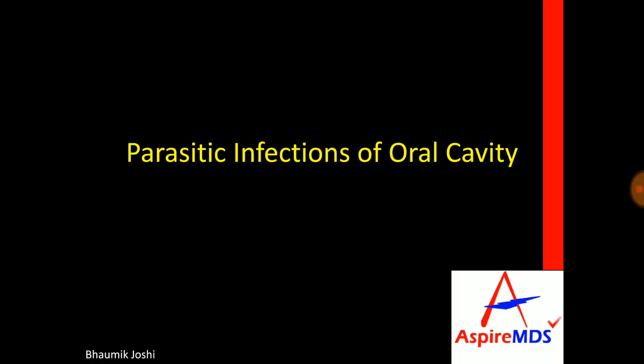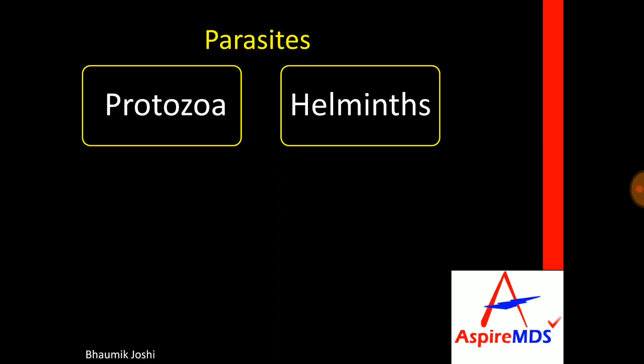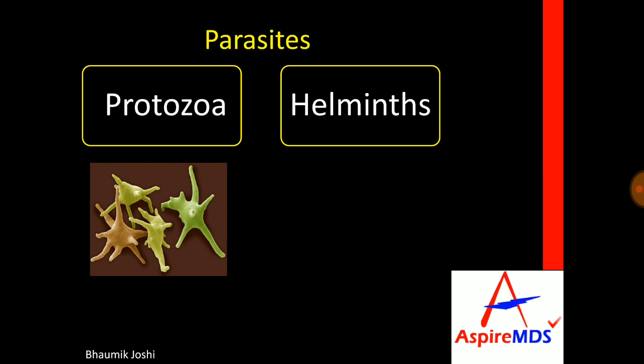Hello everyone, today we will be discussing parasites and parasitic infections of the oral cavity. Parasites can be divided into two main groups: one is protozoa and the other are helminths. Protozoa are unicellular parasites whereas helminths are multicellular parasites.